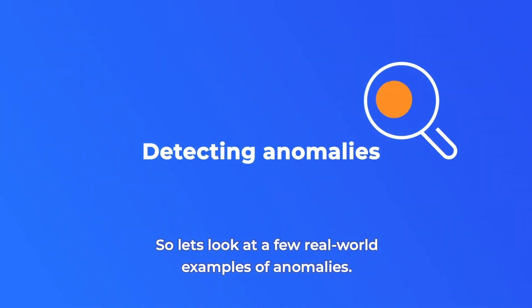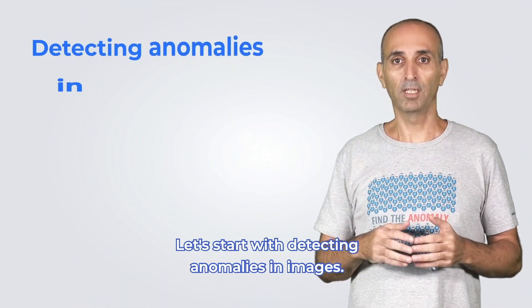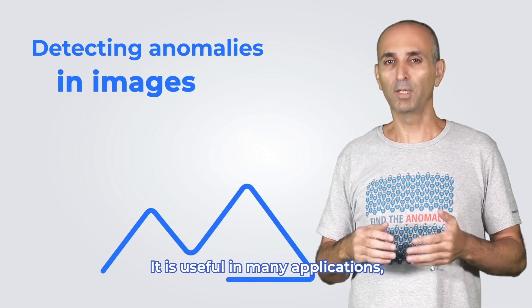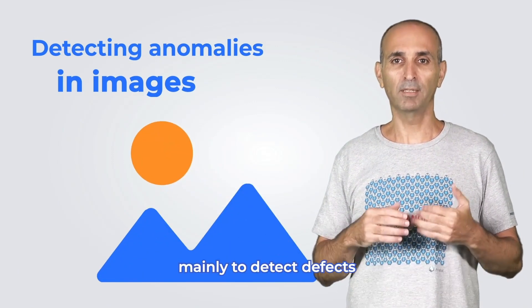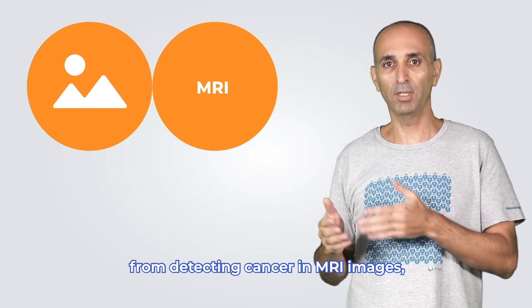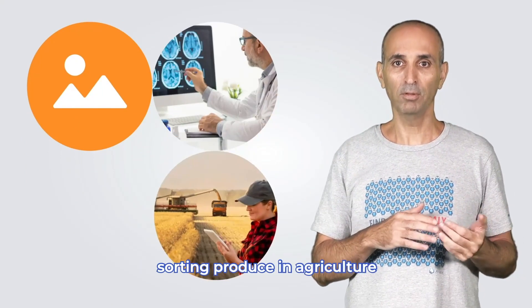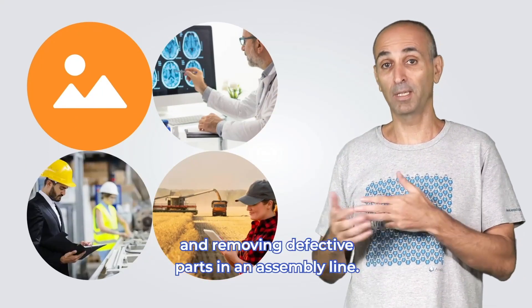So let's look at a few real-world examples of anomalies. Let's start with detecting anomalies in images. It is useful in many applications, mainly to detect defects, from detecting cancer in MRI images, sorting produce in agriculture, and removing defective parts in an assembly line.